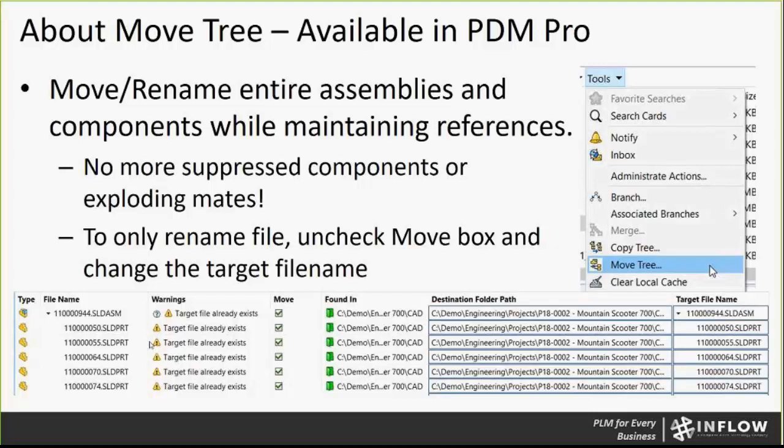What can happen when you do a drag-and-drop is that the database gets overwhelmed by the request and it's not updating everything where you want it. So when you go to open your files, even though you did the drag-and-drop, you may see issues like suppressed components or exploding mates. You can use the update reference tool to help fix those, but why do that when you can use MoveTree to do it for yourself?